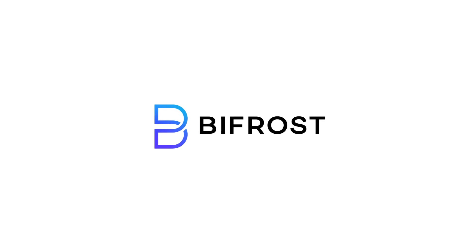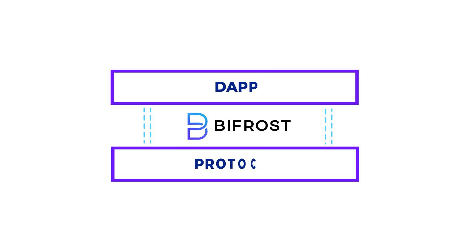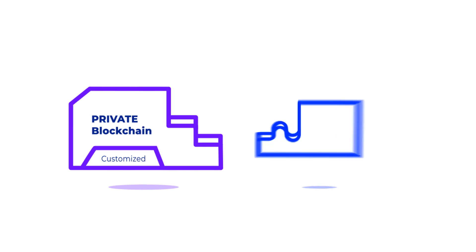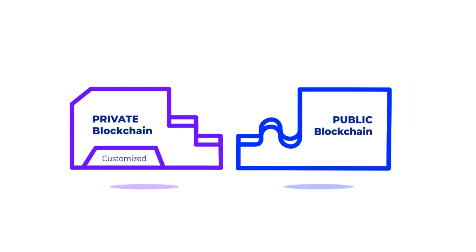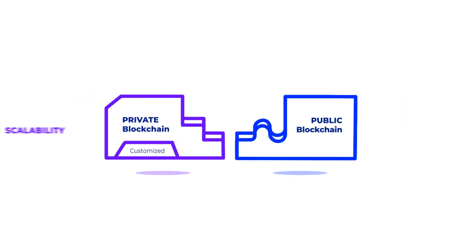That's where Bifrost comes in. Bifrost solves this platform risk by creating a middleware bridging dApps and blockchain protocols. We are combining private and public blockchains — the private blockchain can be tuned up however you want, which leads to enhanced scalability, and the public blockchain gives you safety and decentralization.